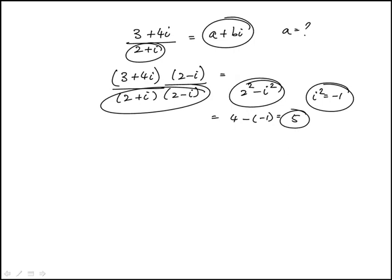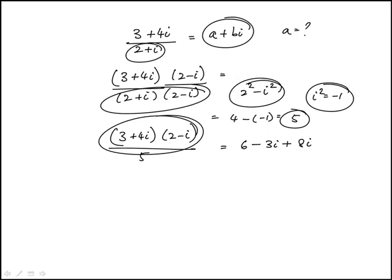So this becomes 3 plus 4i times 2 minus i over 5, and then I have to do this expansion, the numerator. So that's 6 plus 8i minus 4i squared over 5, and then again, i squared is minus 1.